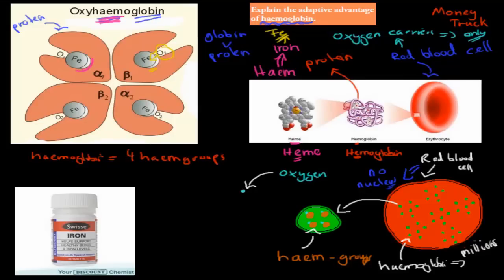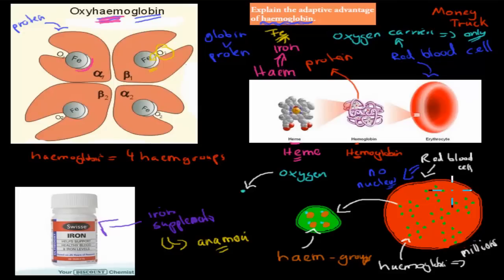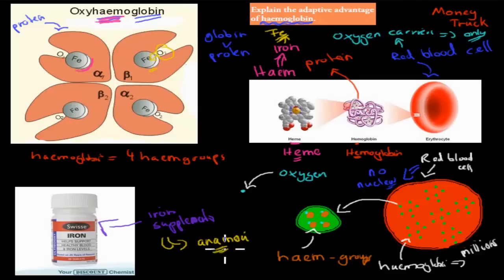Many people take iron supplements, especially for people who have anemia. Anemia is when you have an iron deficiency. The major place where iron is used is to make these heme groups. If you have an iron deficiency, it means we can carry less oxygen in our blood, which means less oxygen to make energy. People with anemia can't make enough heme groups, so their red blood cells can't carry as much oxygen — meaning if you go for a run, you feel fatigued very quickly. This is common in females due to blood loss during menstruation. Anemia can be overcome by taking iron supplements or having an iron-rich diet.